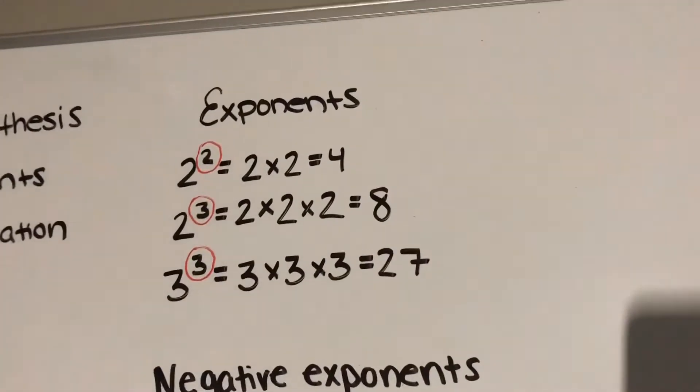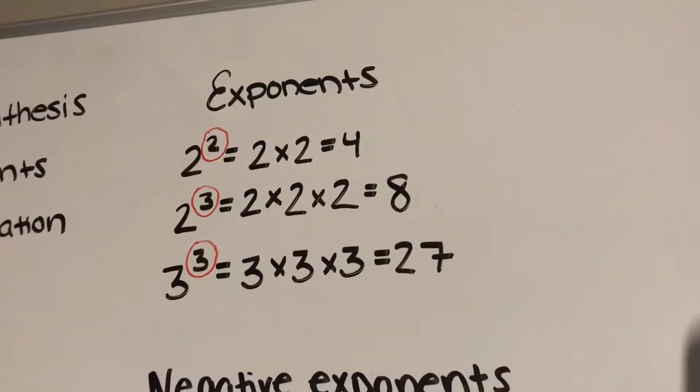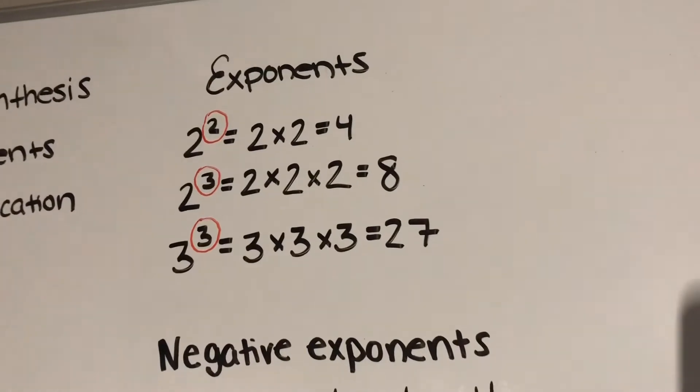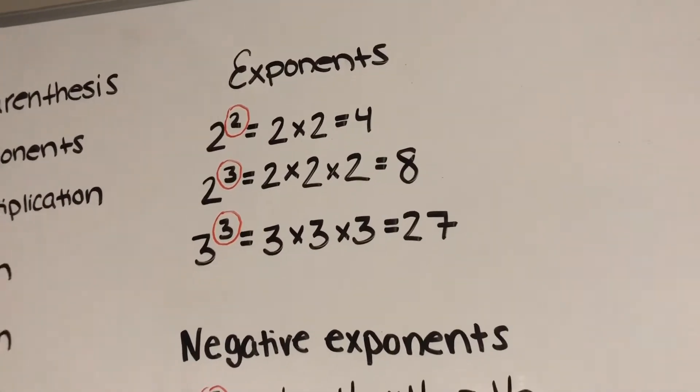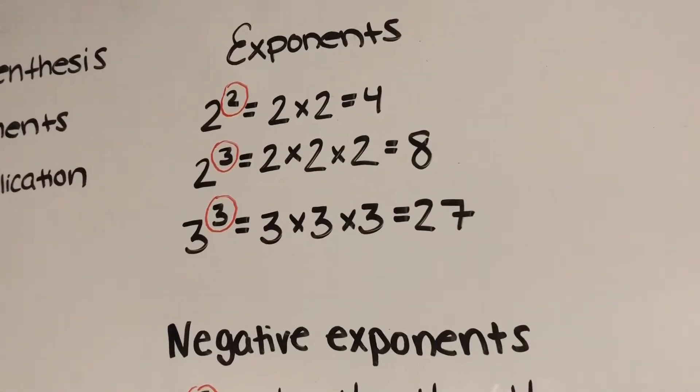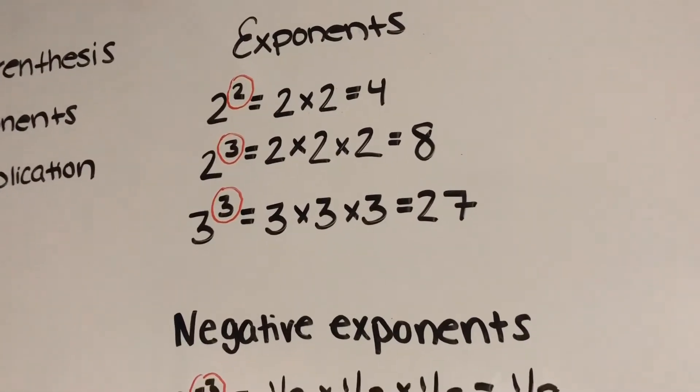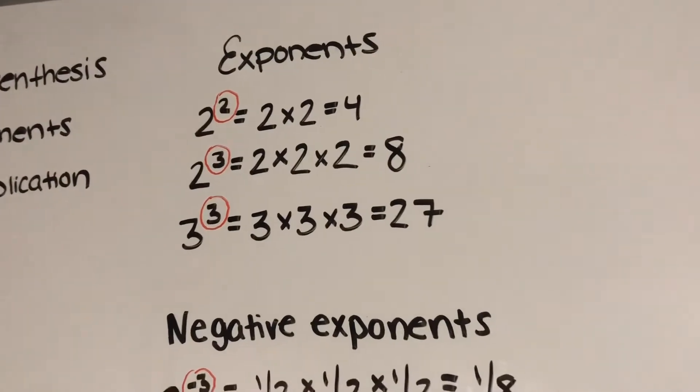Here we have exponents, where you multiply the big number as many times as the little number tells you to. So in the first one, it's 2 squared, so you do 2 times 2, and that equals 4. And in the last one, it's 3 cubed, so you do 3 times 3 times 3, and that equals 27.